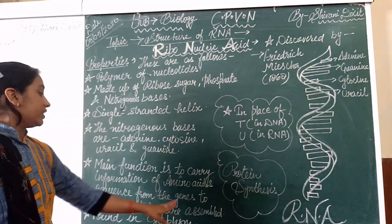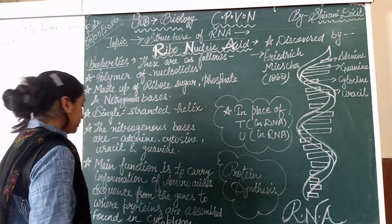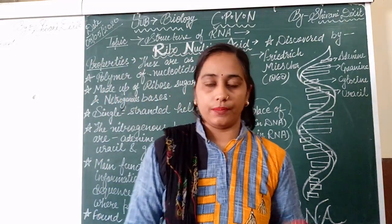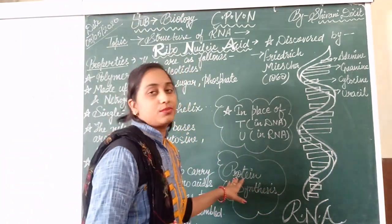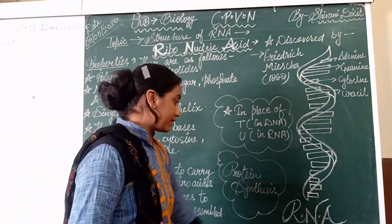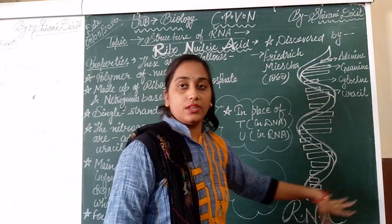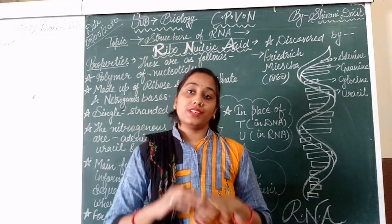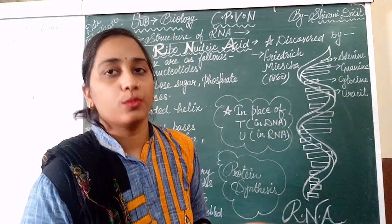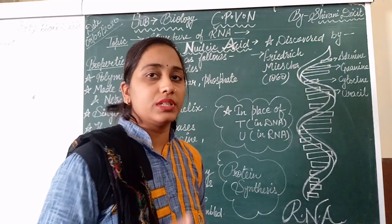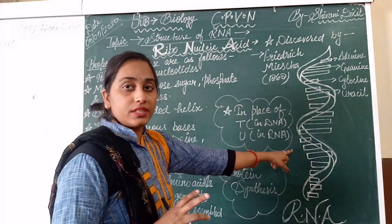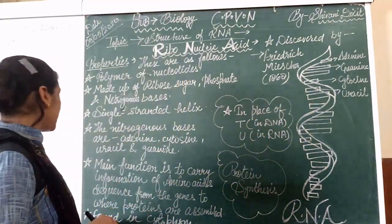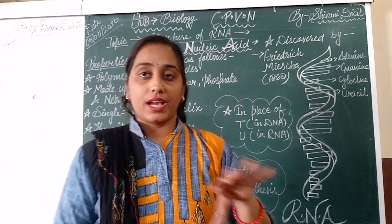The sequence from the genes to where proteins are assembled — RNA stores that information. Its main function is protein synthesis. If you talk about the location of RNA, DNA is present in the nucleus inside the chromosomal structure, but RNA is present in the cytoplasm of the cell.